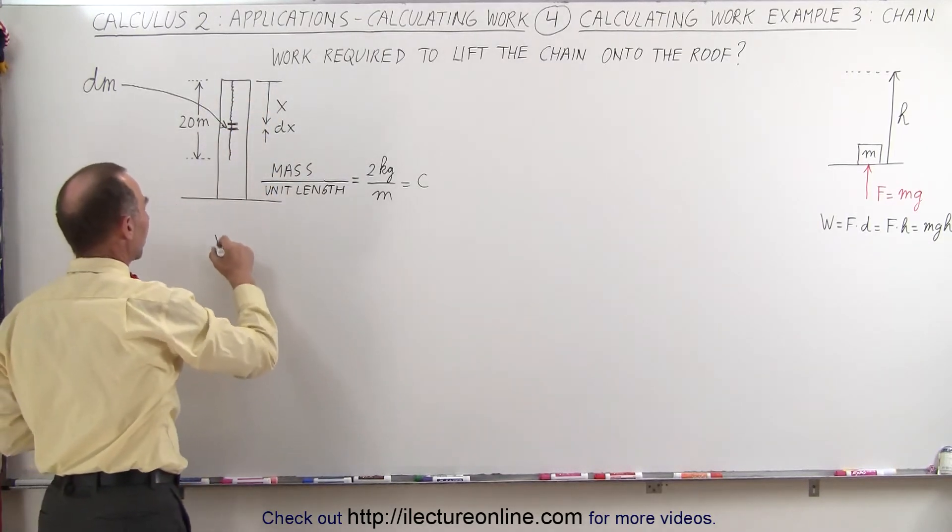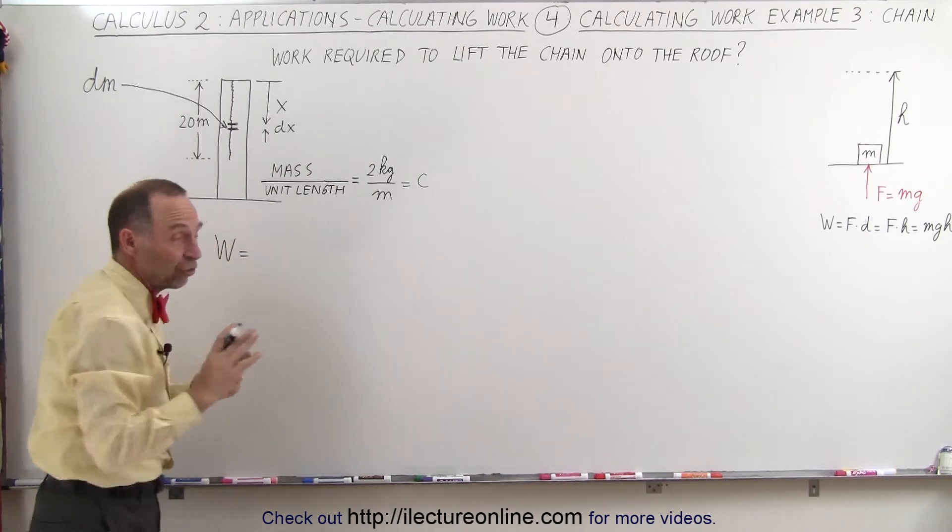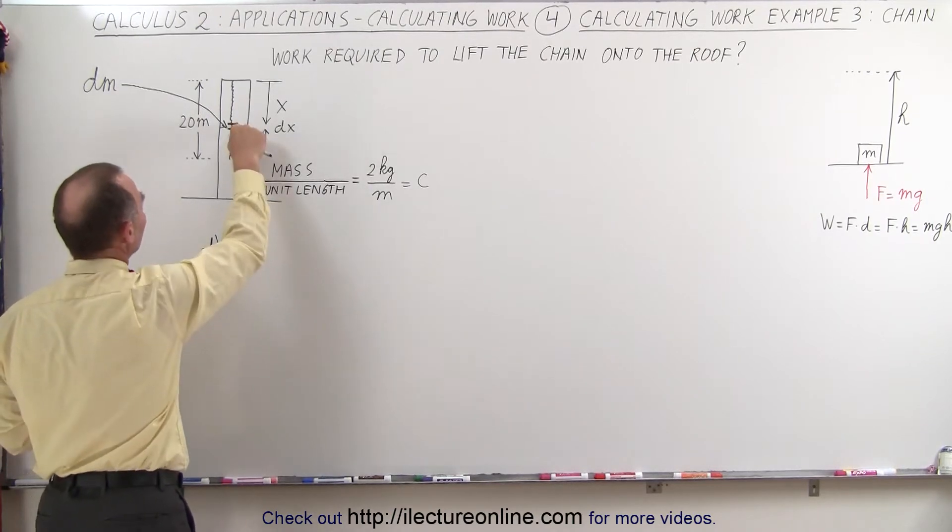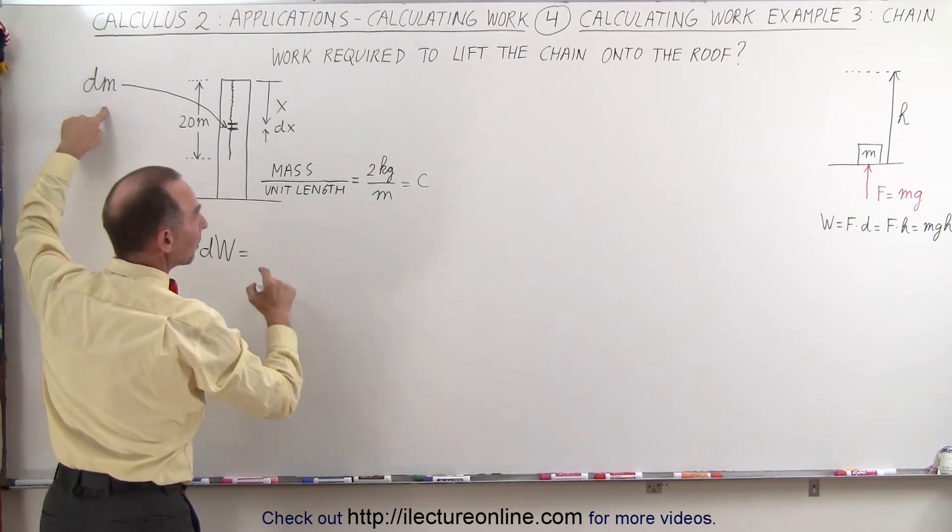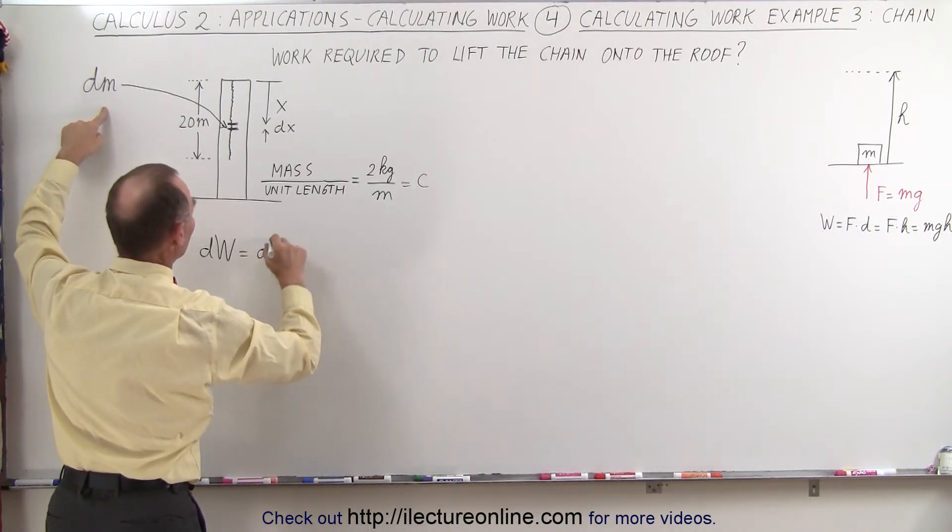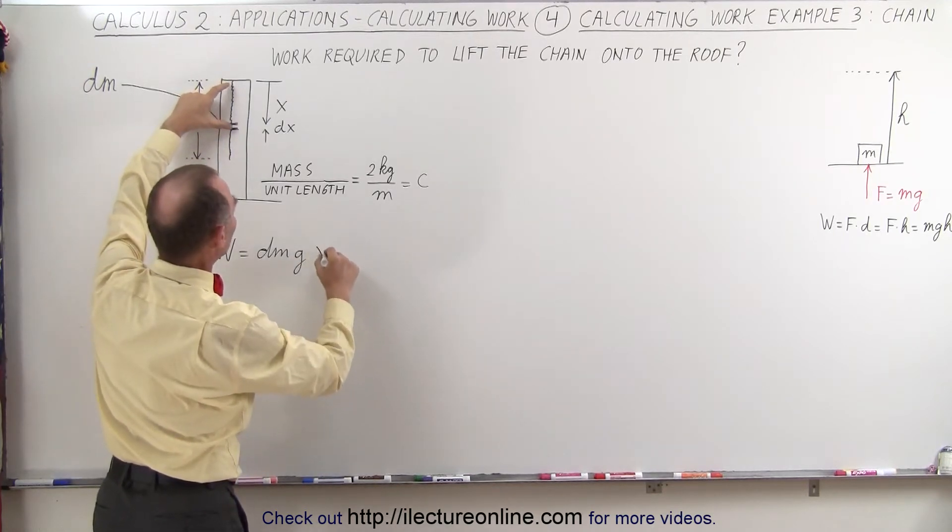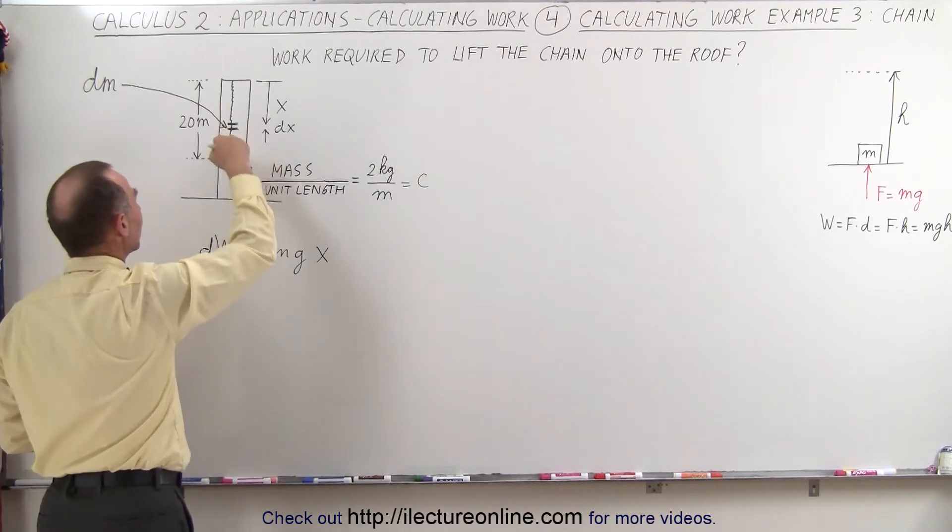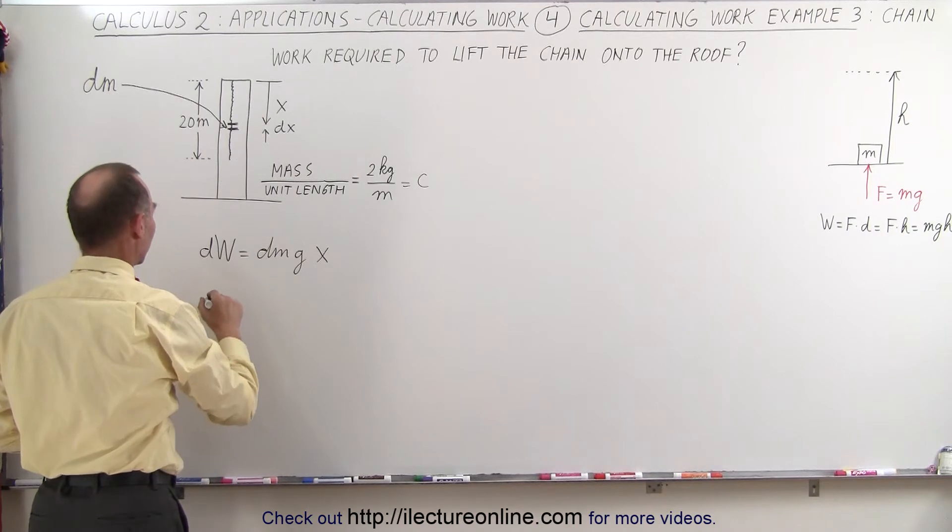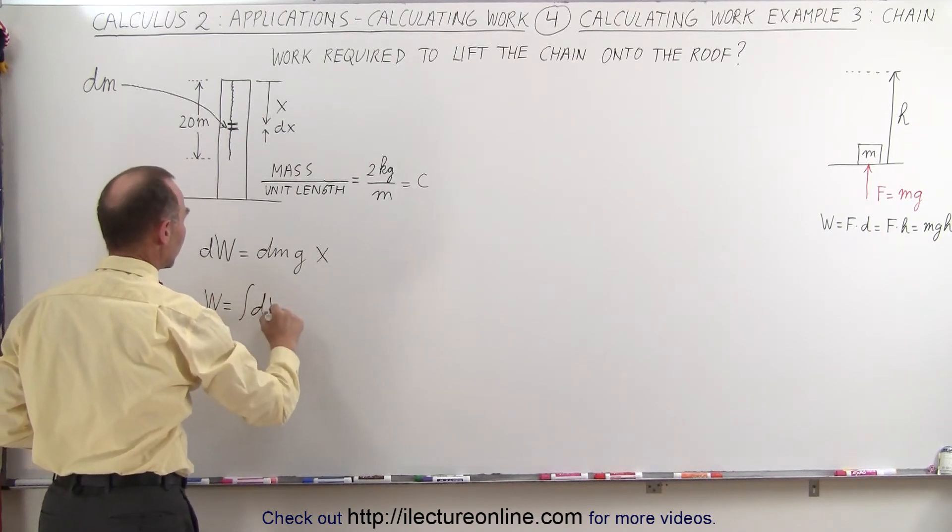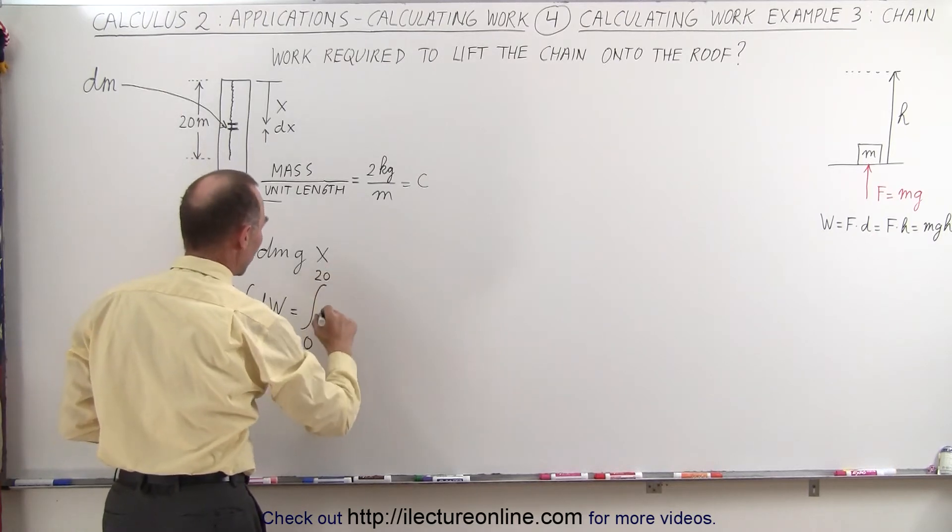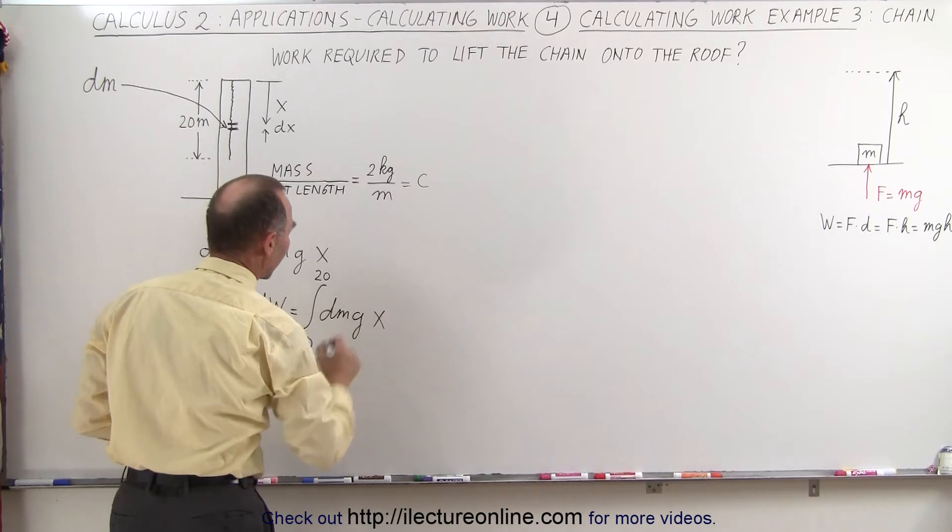Which means that the work done will be equal to, or let's start with the work done for a small little segment, we'll call it dw for this little segment right there. That will be equal to the mass which is dm times acceleration due to gravity times the distance x through which we have to lift it. And of course then to find all of the work, we simply have to integrate over moving all the little segments like that. So w will be equal to integral of dw, which is equal to the integral from x equals 0 to x equals 20 of dm times g times x.